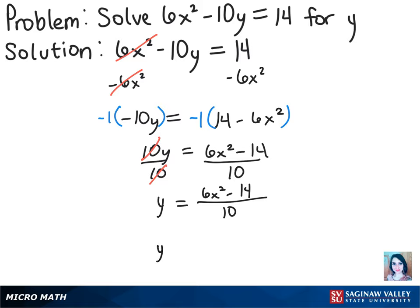That will get us y equals 2 times the quantity 3x squared minus 7 over 2 times 5. Once we cancel those, we'll have our final answer of y equals 3x squared minus 7 over 5.